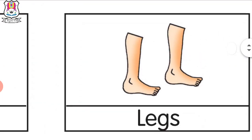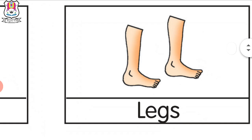What is next? Legs. We have two legs. How many legs do we have? Two. We run with legs. We skip. We bend down. We jump. So, what is this? Legs.